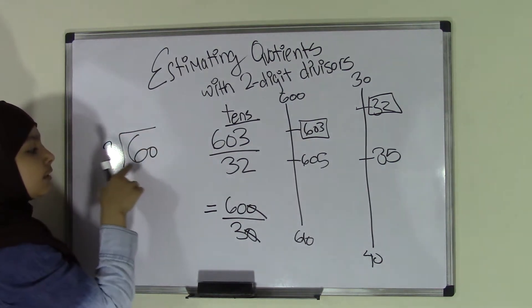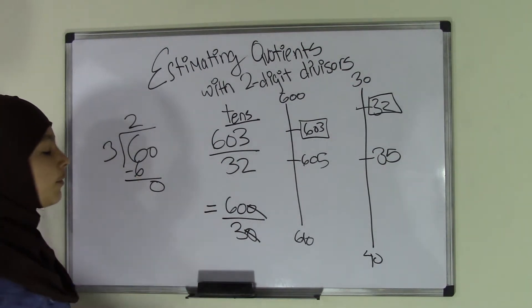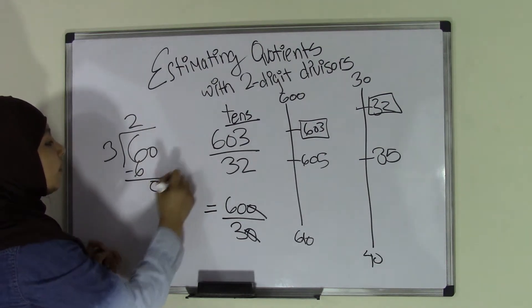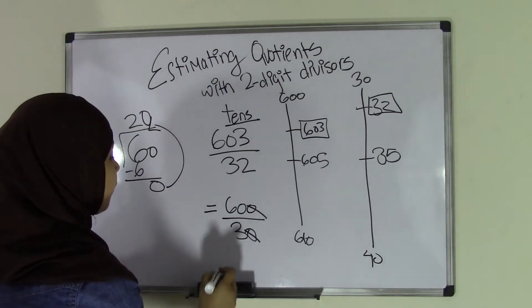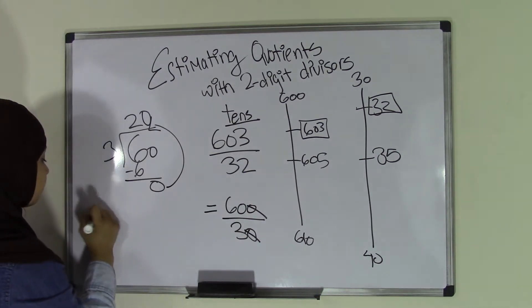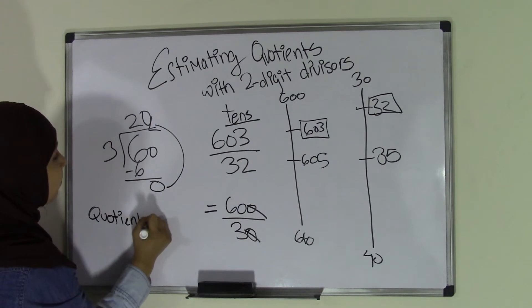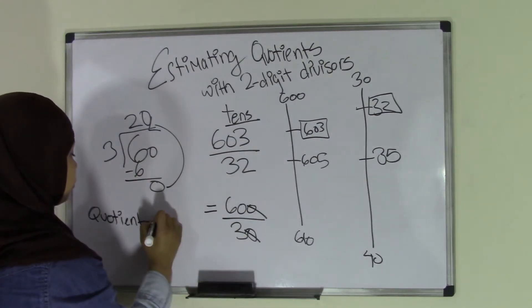We know that 3 goes into 6 two times, and then since we have one 0 left, we're just going to take the 0 and bring it up here. So that means our quotient would equal 20. Therefore, the quotient to this problem, 603 divided by 32, the estimated quotient equals 20.